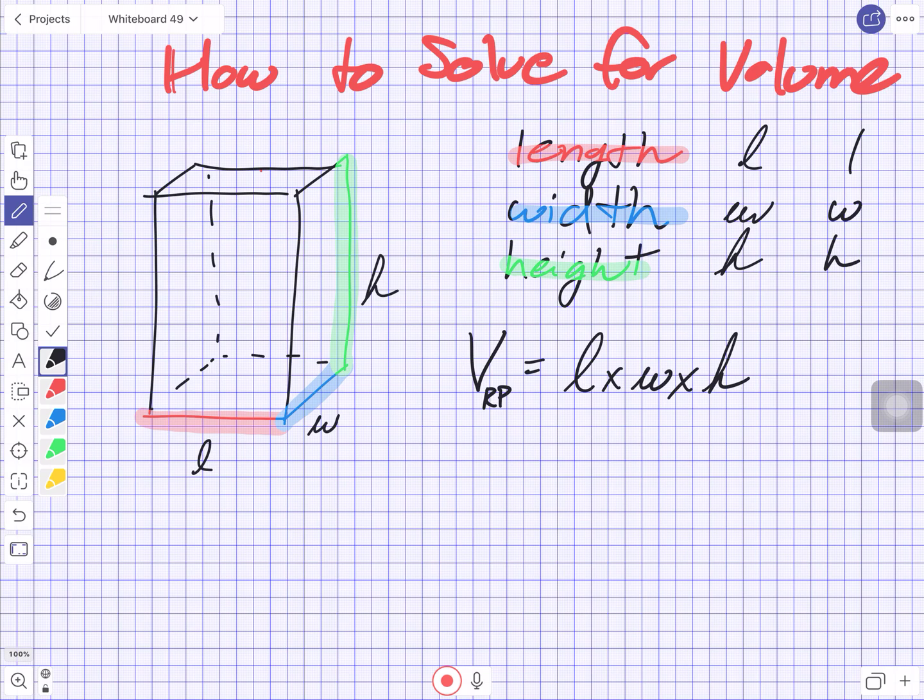If they had given us the numbers 2, 3, and 4, all I would do is say the volume of the rectangular prism—you don't have to write those subscripts. I replace length with the number 2, the width with 3, and the height with 4. Then I multiply these numbers together. Two times three gives me 6, and then 6 times 4 gives me 24.